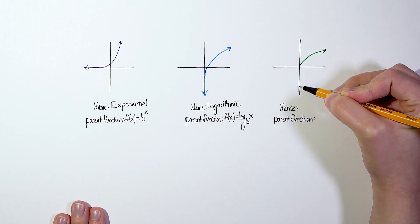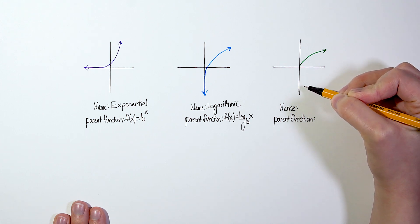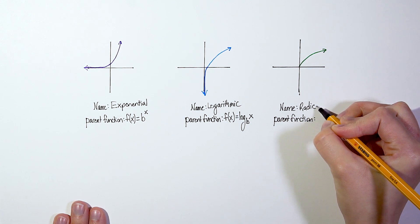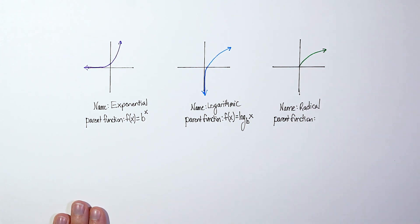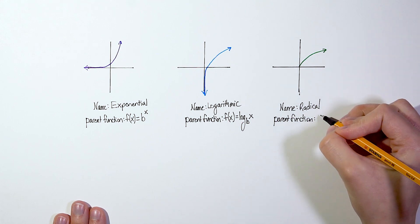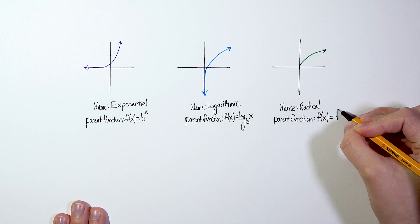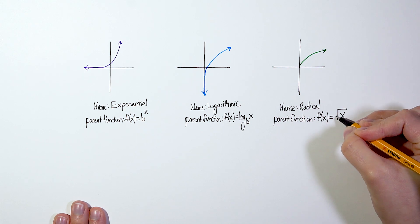So we call this a radical. This is a radical function. And the parent function of a radical function is f(x) = √x. So this is a radical or square root.